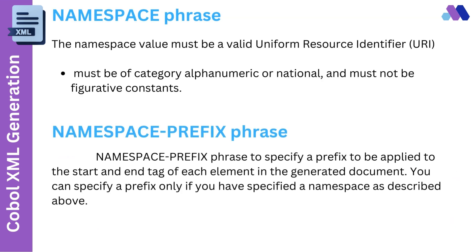The Name Space value must be a valid uniform resource identifier, must be of category alphanumeric or national, and must not be figurative constants. The Name Space Prefix phrase is used to specify a prefix to be applied to the start and end tag of each element in the generated document. You can specify a prefix only if you have specified a name space.